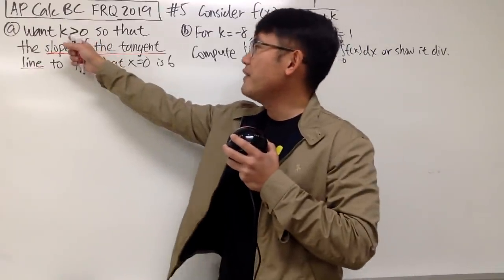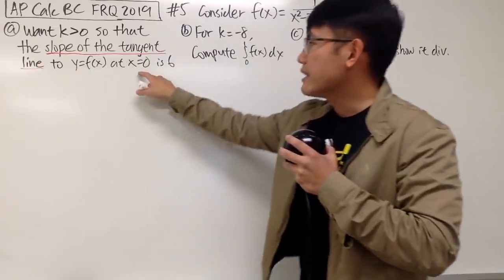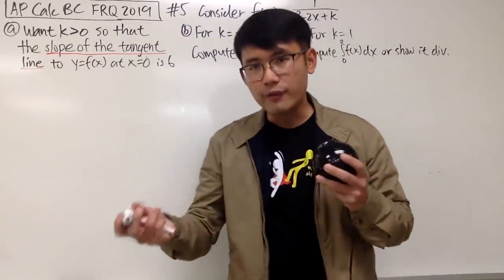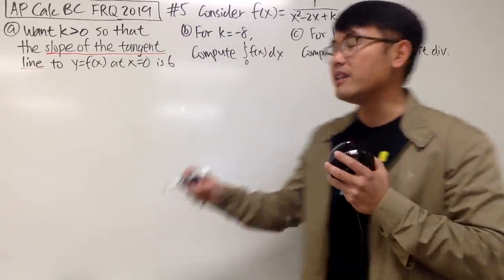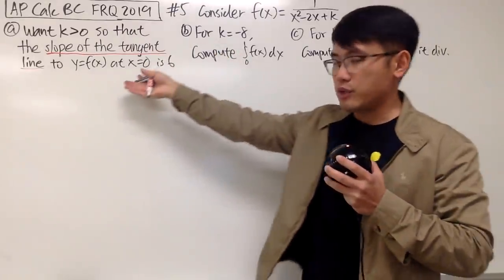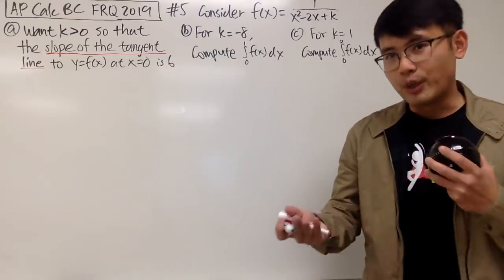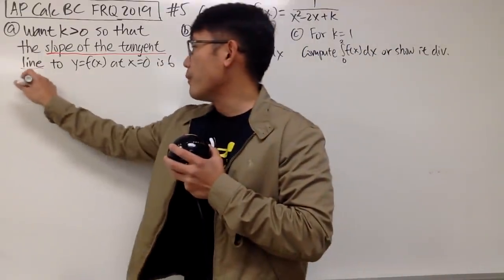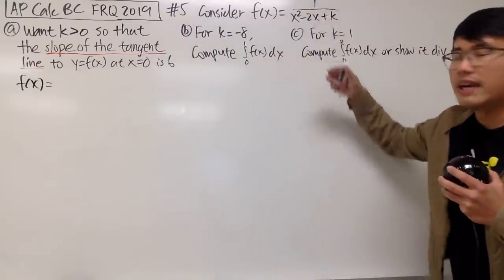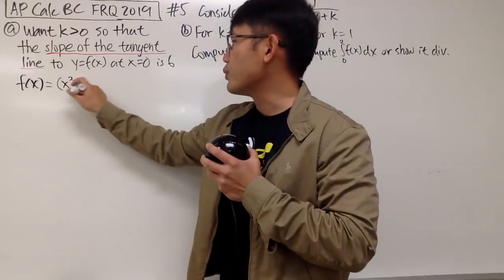We want a positive k value so that the slope of the tangent line to the curve at x equals 0 will be 6. The slope of the tangent line tells us we should take the first derivative of the function, then put in 0 for all the x's and set the expression equal to 6. So f(x) — it's much easier if you write this as the expression to the negative 1 power, and then differentiate.